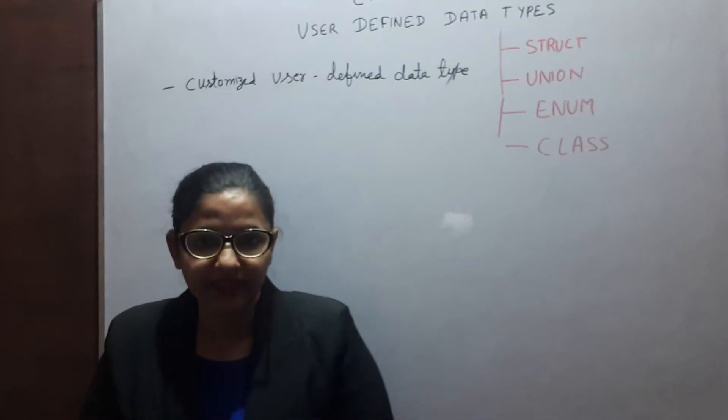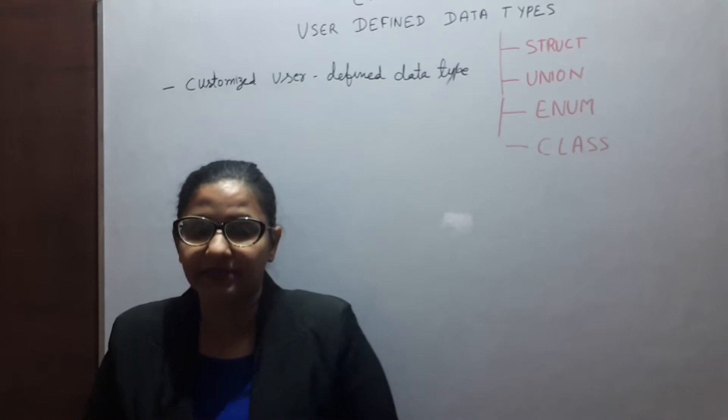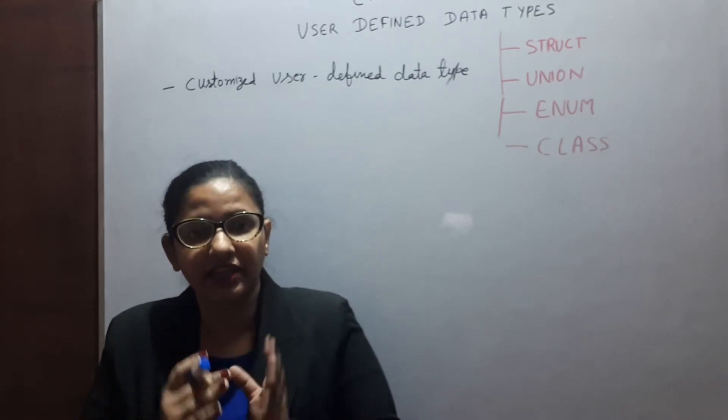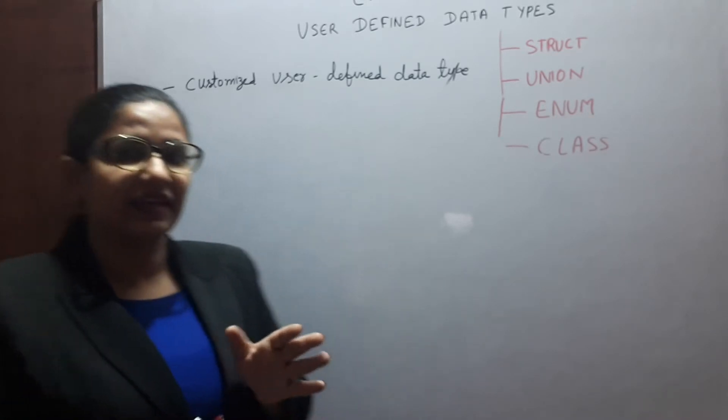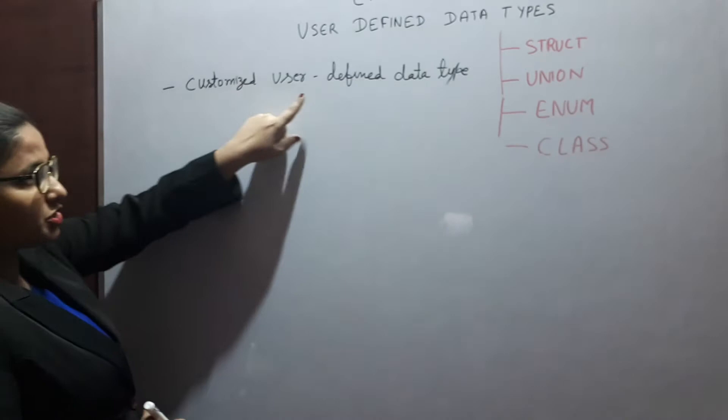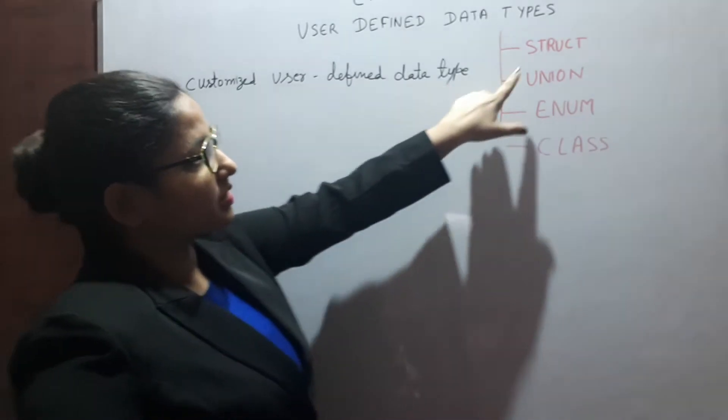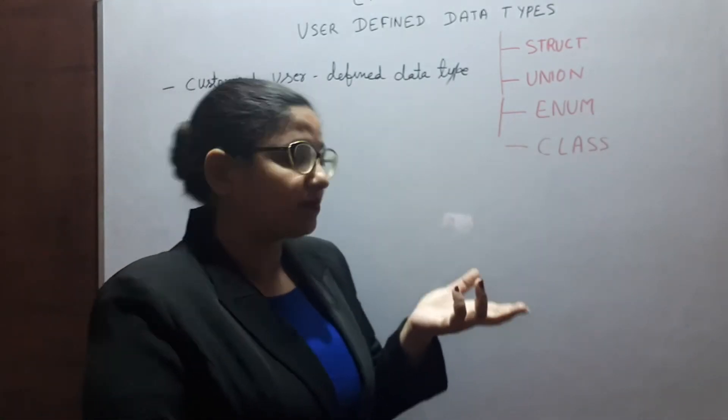Good morning guys. Let's see user-defined data type in C++. User-defined data types are basically derived from built-in data types. These are customized user-defined data types. These are some examples of user-defined data type.